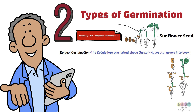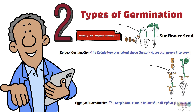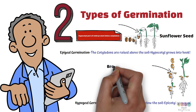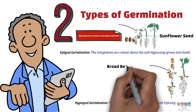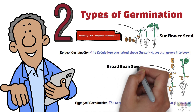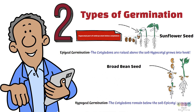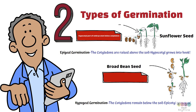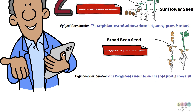The next type of germination is hypogeal germination. The cotyledons remain below the soil, the epicotyl simply grows upwards, and this happens in broad bean seeds. The epicotyl is the part of the embryo stem just above the cotyledons, or just above where the cotyledons attach.